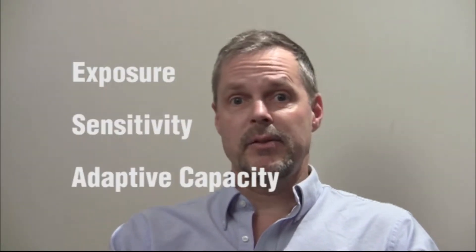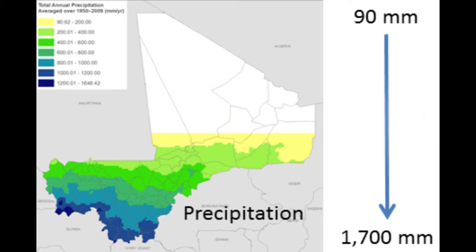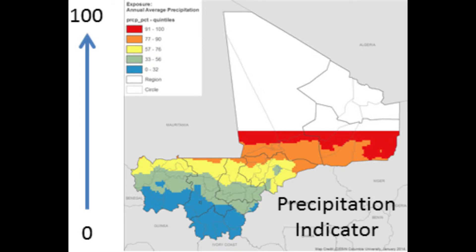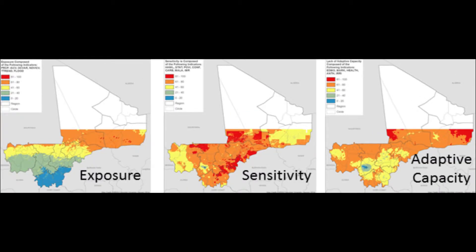Let's look at some of the input data layers and methods and then describe the overall results. We considered vulnerability to be comprised of three components: exposure, sensitivity, and adaptive capacity. We took raw data layers and recoded them on a zero to 100 scale such that 100 equated with highest vulnerability and zero equated with lowest vulnerability. We averaged the scores for all the indicators in each component and then averaged the components together to produce an overall vulnerability map.